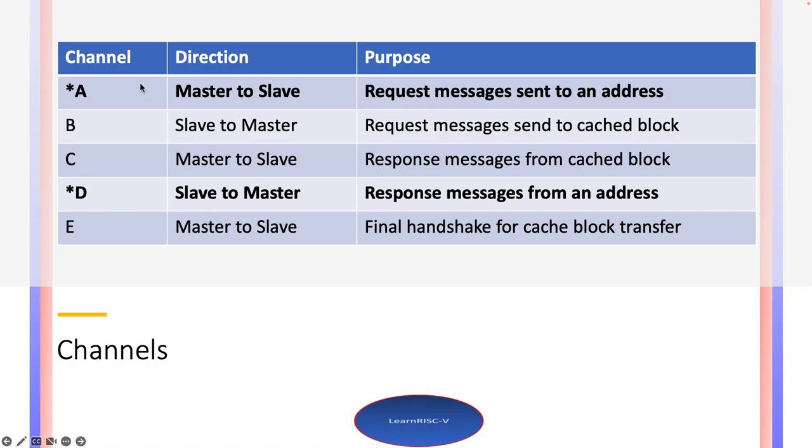Now let's see these channels. As I slightly emphasized before, in TileLink protocol there are five different channels. These channels are dedicated for a purpose. For example, if you take channel A, the direction is restricted only from master interface to slave interface, and it can be used only to send request messages to an address.